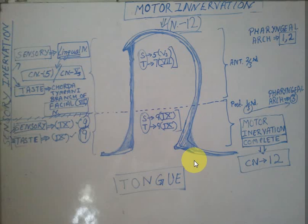One more link: the anterior two-thirds of the tongue is derived from pharyngeal arches one and two — as you can see in the upper right corner of the video. That also makes the number 12: the tongue shape is 12, motor innervation is 12, and pharyngeal arches one and two for the anterior two-thirds also makes 12. The posterior one-third is from pharyngeal arch three.